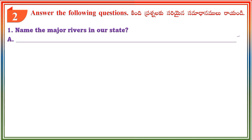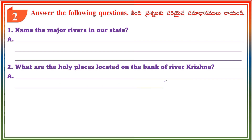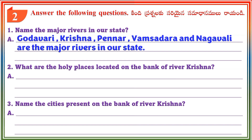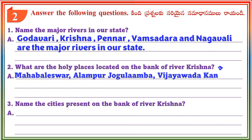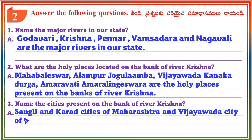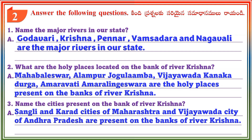Section 2: Answer the following questions. Question 1: Name the major rivers in our state. Answer: Godavari, Krishna, Pennar, Vamsadhara and Nagavali are the major rivers in our state. Question 2: What are the holy places located on the bank of river Krishna? Answer: Mahableshwar, Alampur Jogulamba, Vijayawada Kanaka Durga, and Amravati Amaralanjeshwara are the holy places on the banks of river Krishna. Question 3: Name the cities present on the banks of river Krishna. Answer: Sangli and Karad cities of Maharashtra and Vijayawada city of Andhra Pradesh are present on the banks of river Krishna.